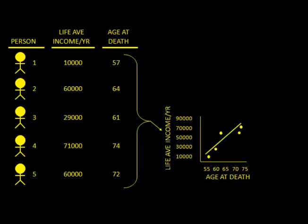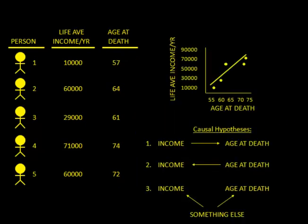We're going to be using this kind of representation when building models — you've probably seen this before. This is just a representation of a regression model with these two variables. The model is essentially a way to represent the patterns we see in the data, and from those patterns we can hypothesize the different causal structures accounting for the association we observe.